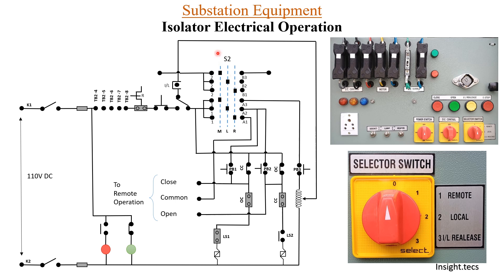If selector switch position 1 is selected, the contact of 1 will be closed and remote operation will be possible. If the selector switch is pointing at 2, that is for local operation. If we want to do the IL release, position 3 has to be selected. Once the key is inserted, we will be able to carry out local electrical operation.